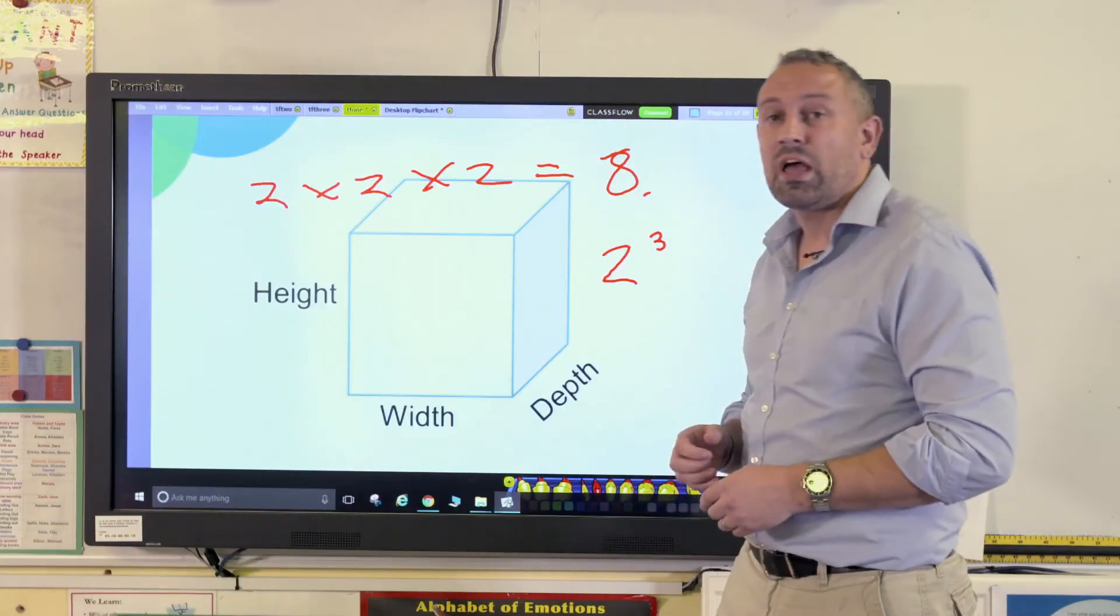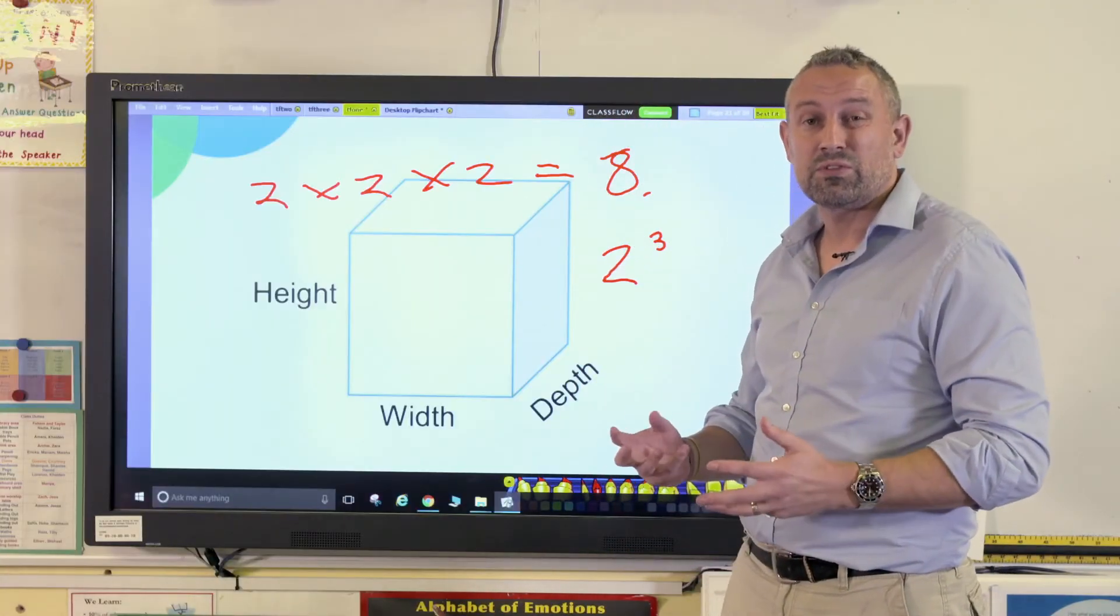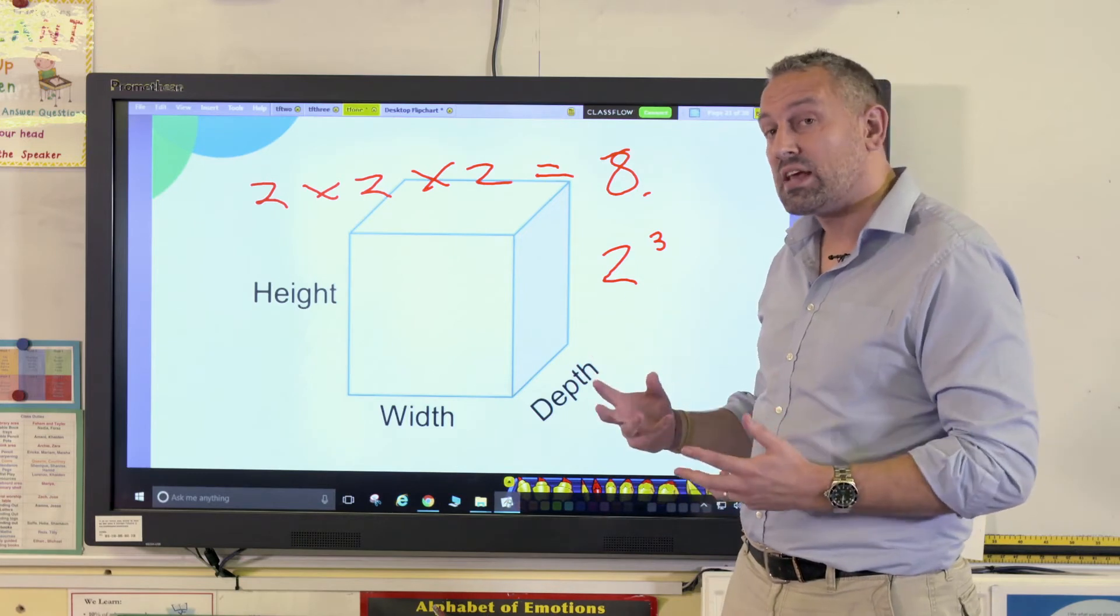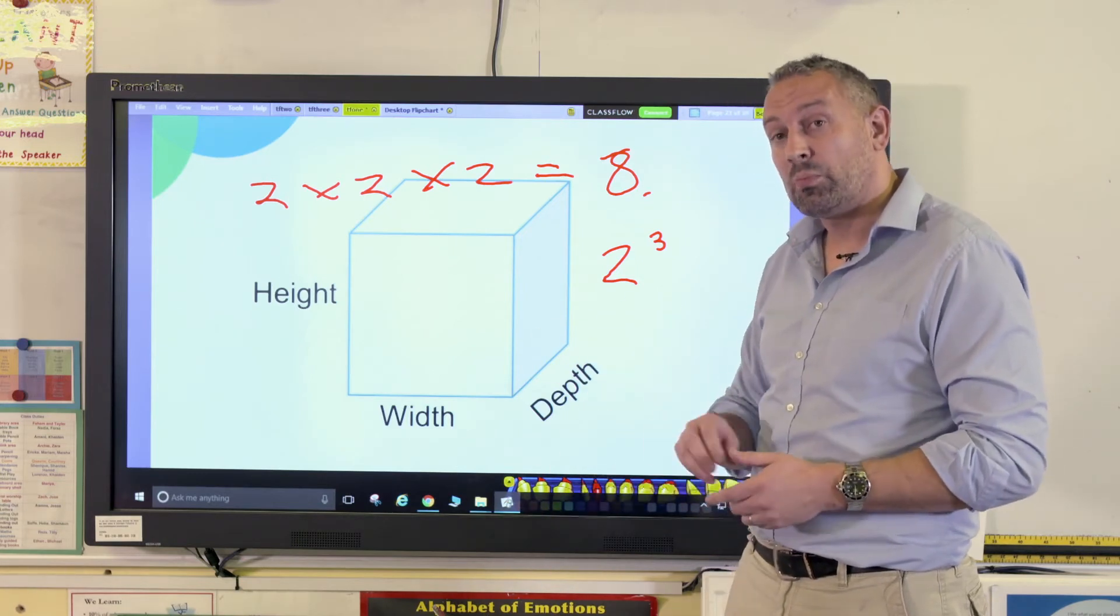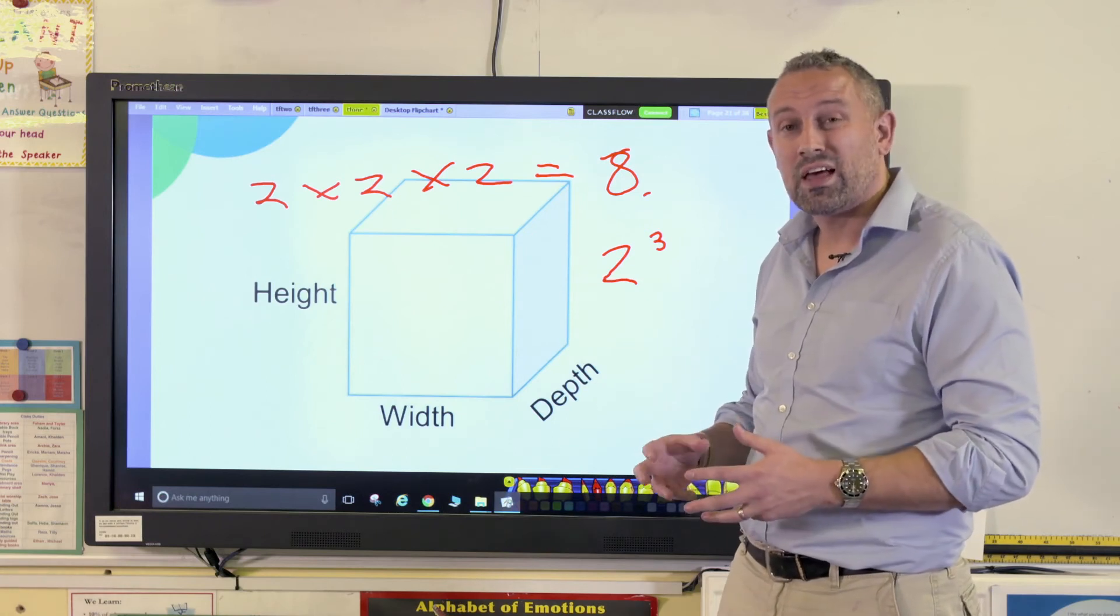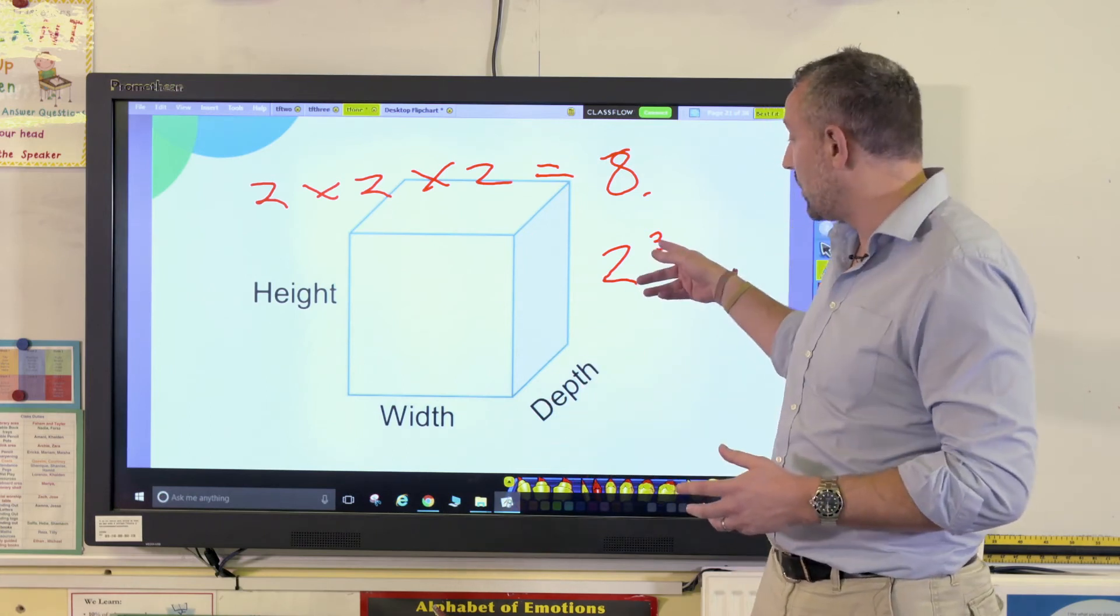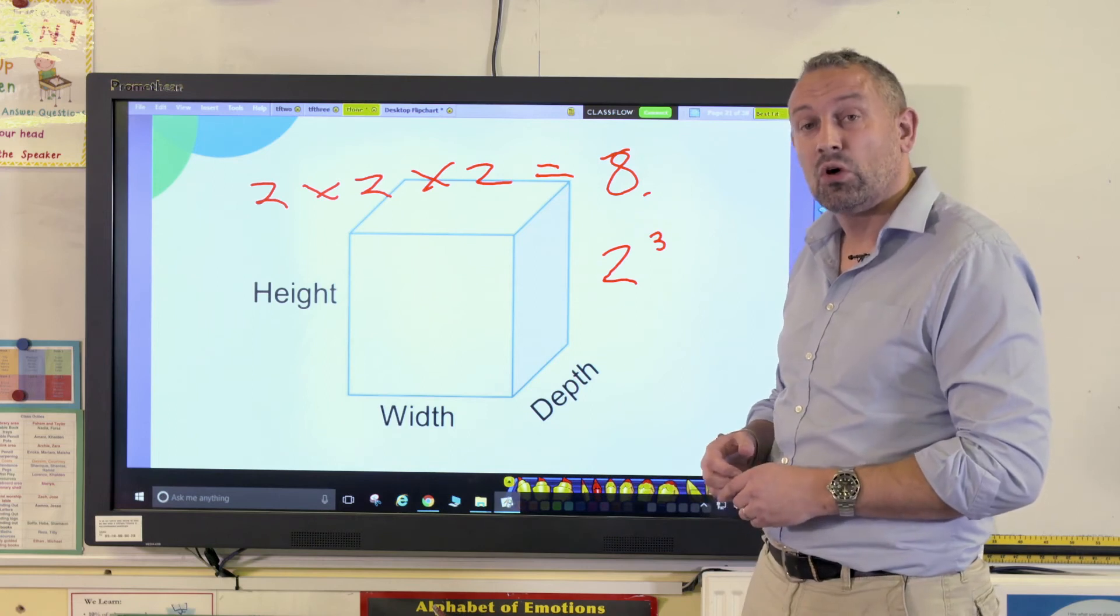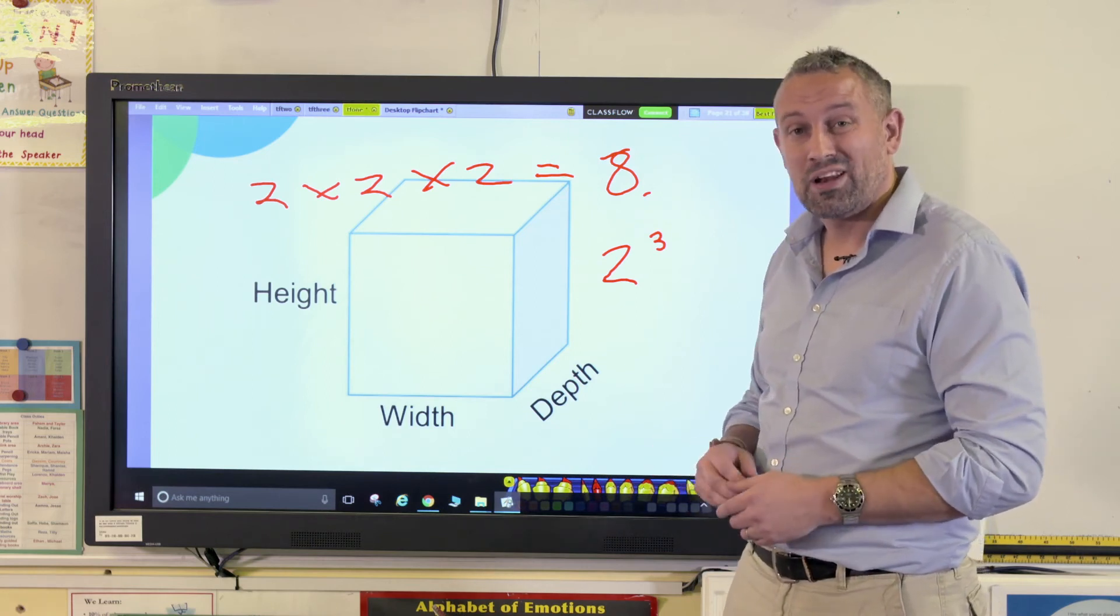From then on, I would get the children to explore with different cube numbers and square numbers and see if they could write it down. They've got the concrete, the pictorial, and then the abstract—the numbers. If they understood that and were able to write it down with the notation 3 for cubed or 2 for squared, that would really help them.